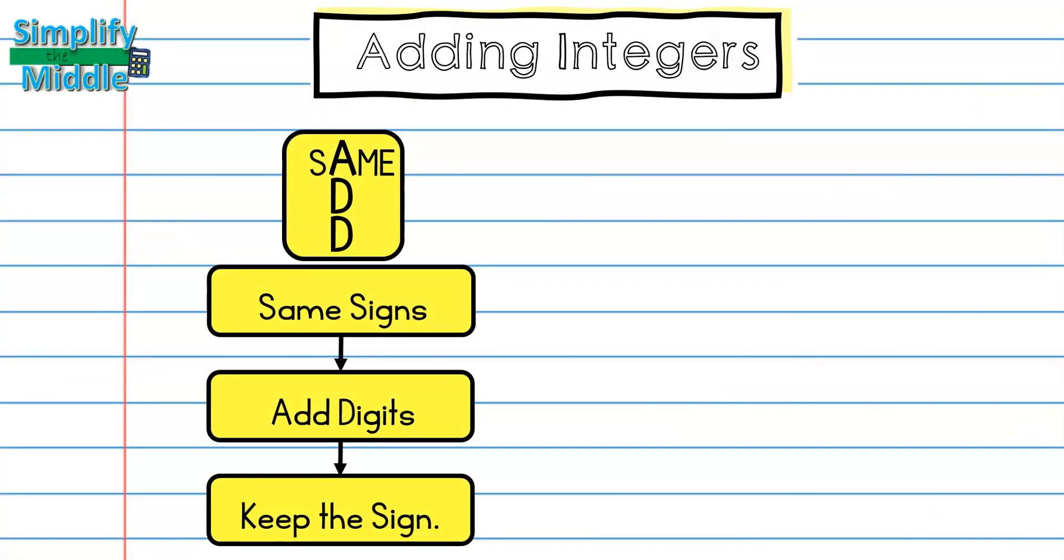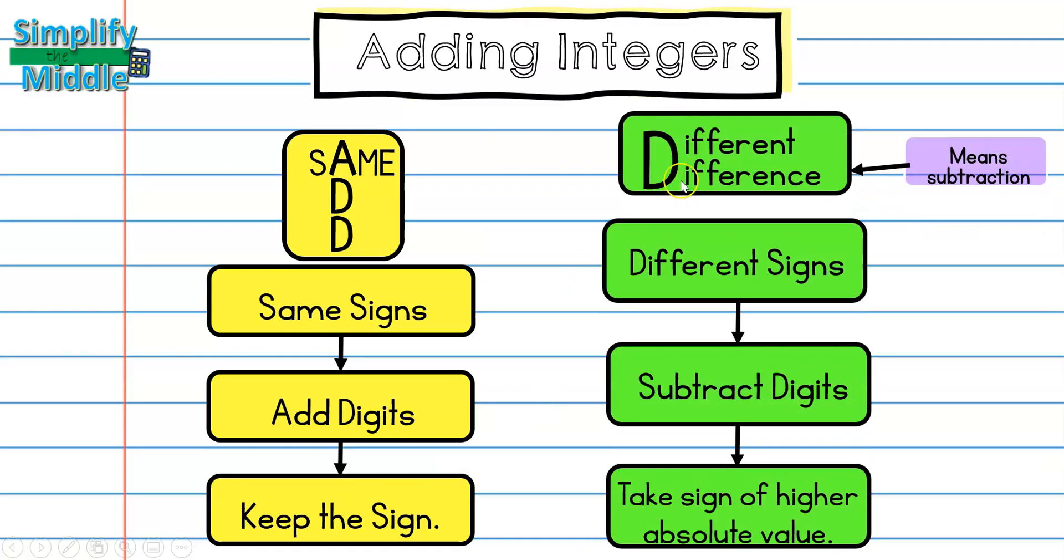So, just a quick recap. We know that when we have same signs, we're going to add the digits and keep the sign. And if we have different signs, we are going to subtract the digits and take the sign of the higher absolute value.